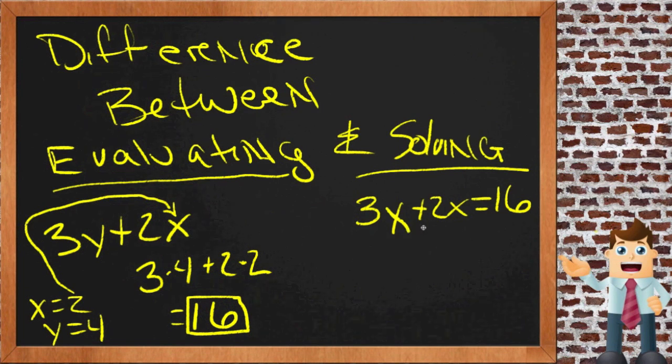For instance, if I were to make this only a single variable so we can actually get an actual value for it. So if we were to say 3x plus 2x equals 16, then solving it would be going through and finding out what value x could be that would make this statement true.